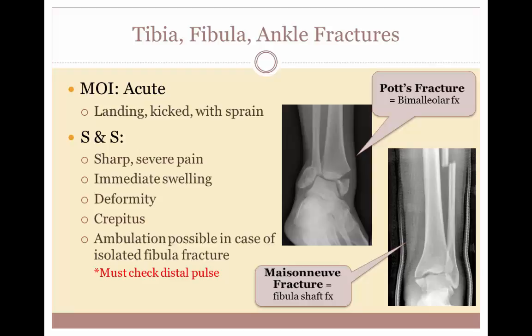Specific types of fractures include a Pott's fracture, which is when both the lateral and medial malleoli are fractured. This happens most frequently when an athlete steps in a hole in the ground. A Maisonneuve fracture is a fibular shaft fracture that results from an eversion ankle sprain. During the extreme eversion, the lateral malleolus is driven up into the shaft of the fibula, resulting in a fracture in the shaft or neck of the fibula.